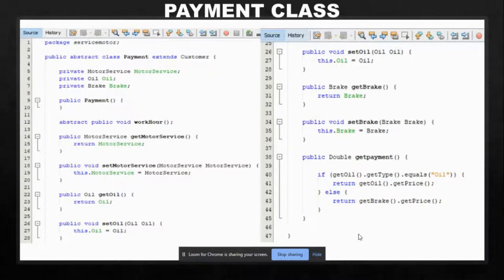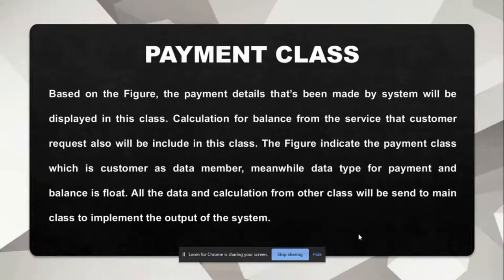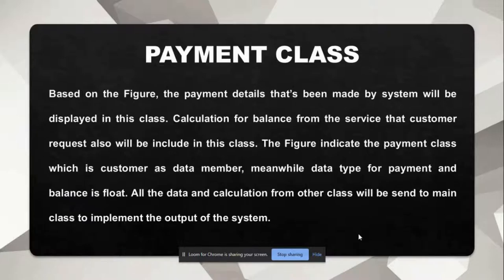The next one is the payment class. As you can see from the figure, the payment details that have been made by the system will be displayed in this class. The calculation for the balance from the service that the customer requires will also be included in this class. The figure indicates the payment class which uses customer as a data type, while the data type for payment and balance is float. All the data and calculations from other classes will be sent to the main class to implement the output of the system.